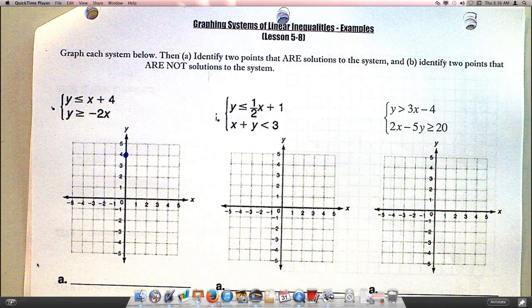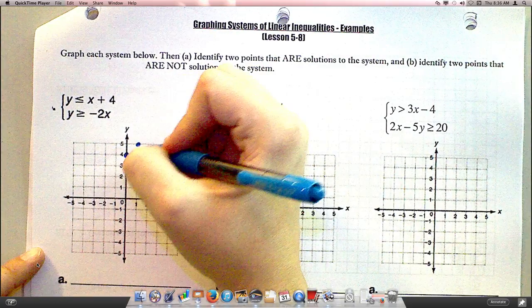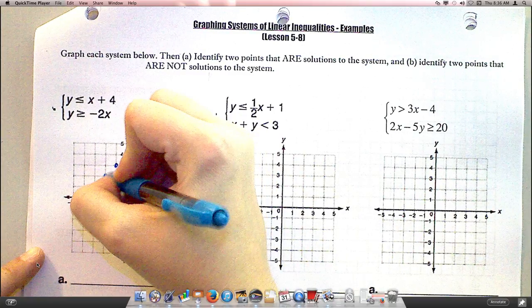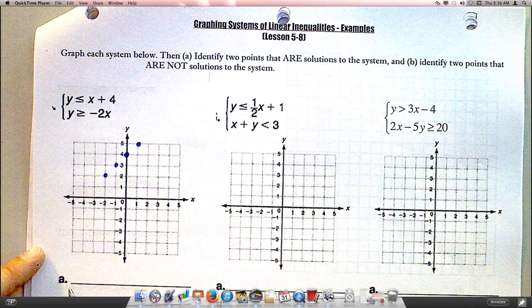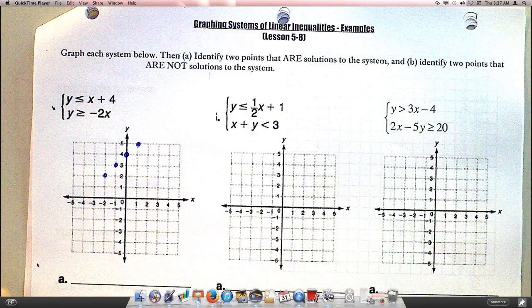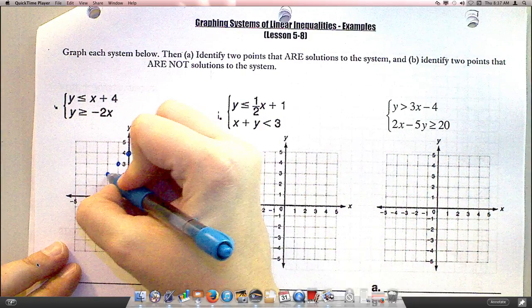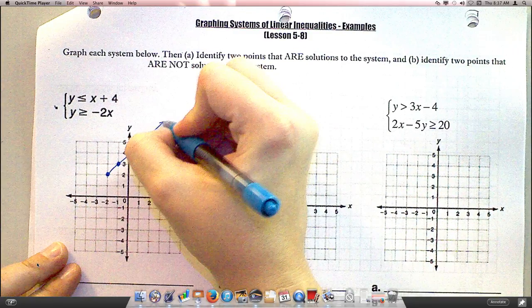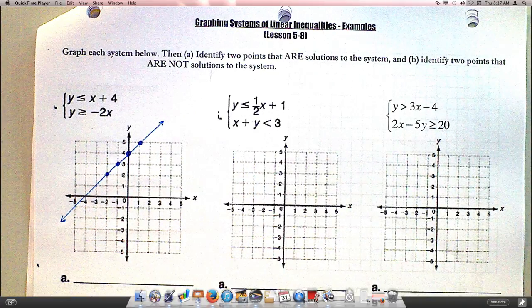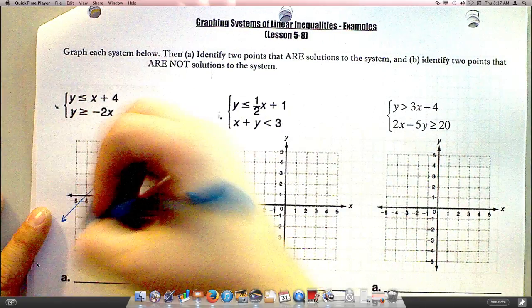What's my slope? Up 1 over 1. I kind of run out of space, so where else could I go? Down 1, left 1. Yeah, it would make the same line. What kind of line am I drawing? Solid. This is solid because there is an equal bar. And where am I shading? The bottom, right? Because it's less than, so shade the bottom.